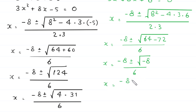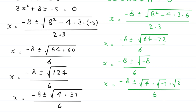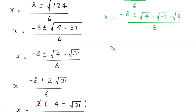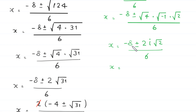x equals negative 8 plus or minus the square root of negative 8, which can be written as root 4 times root negative 1 times root 2, divided by 6. Root 4 becomes 2 and root negative 1 becomes i. So x equals negative 8 plus or minus 2i root 2, divided by 6. Factoring out 2 gives (negative 4 plus or minus i root 2) divided by 3.